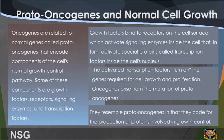Proto-oncogenes and normal cell growth. Oncogenes are related to normal genes called proto-oncogenes that include components of the cell's normal growth control pathway. Some of these components are growth factors, receptors, signaling enzymes, and transcription factors. Growth factors bind to receptors on the cell's surface, which activate signaling enzymes inside the cell that, in turn, activate special proteins called transcription factors inside the cell's nucleus. The activated transcription factors turn on the genes required for cell growth and proliferation.